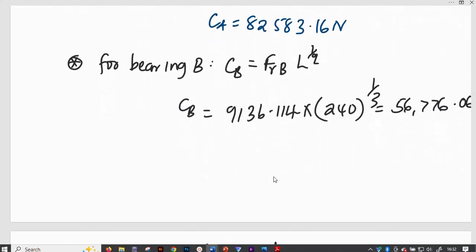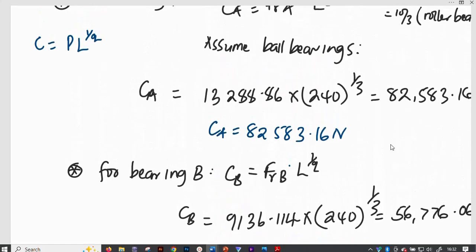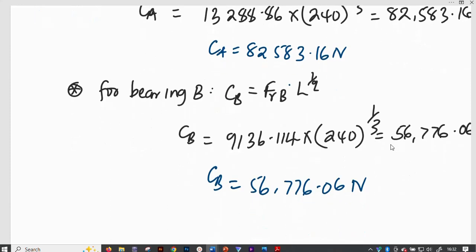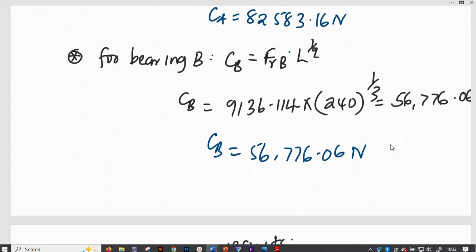Then for bearing B, also we will have it as CB equal to FRB times L to power 1 out of Q. Then CB will be 9,136.114 times 240, which is the service life in a million revolutions, power 1 out of 3. CB will also give us 56,776.06 Newtons. So those are the dynamic load carrying capacities of bearing A and B respectively.